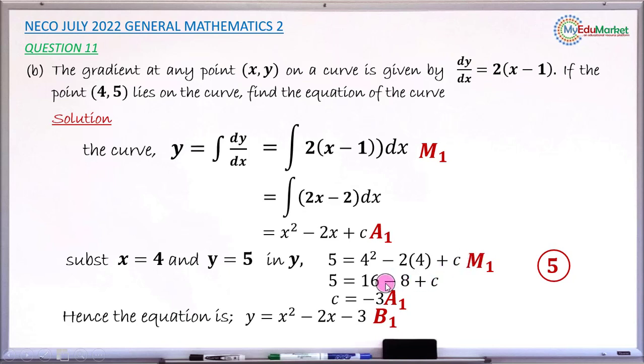And when you now have the constant of integration exactly equals minus 3, you have this accuracy 1 mark. And when you now write the equation exactly y equals x squared minus 2x minus 3, you have this bonus 1 mark. So in total this question has 5 good marks.